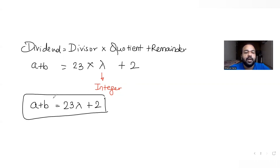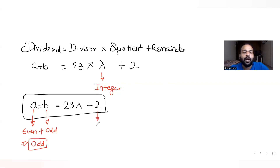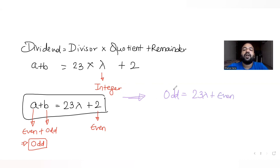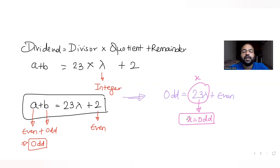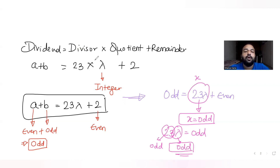Now, a is even and b is odd, so a+b is always odd. That means 23λ + 2 must be odd. Since 2 is even, the term 23λ must be odd. Since 23 is odd, λ must also be odd for the product to be odd.